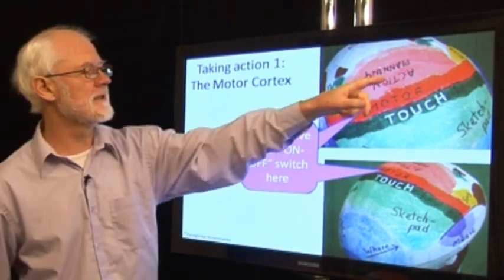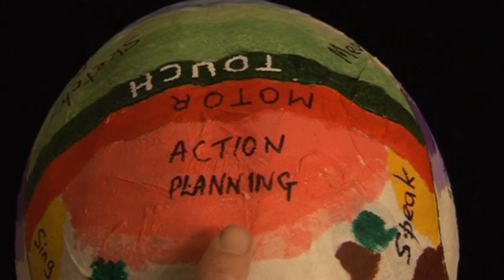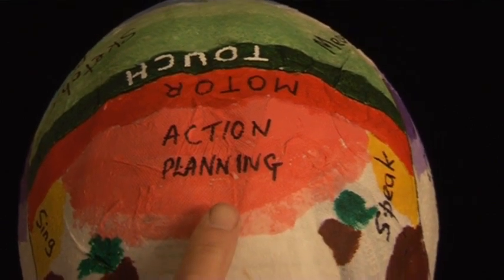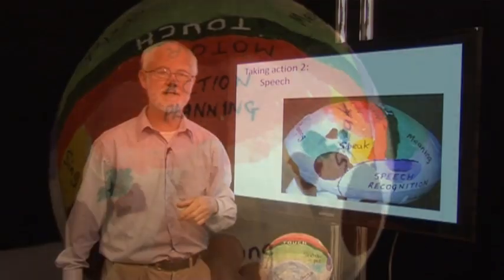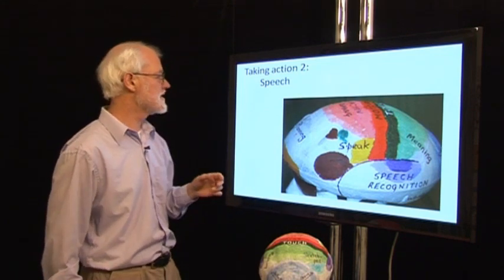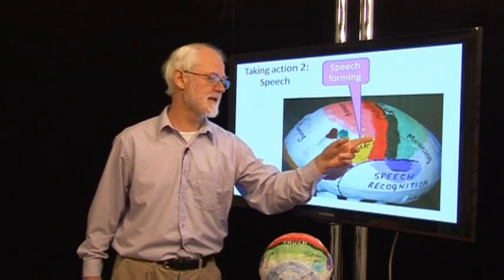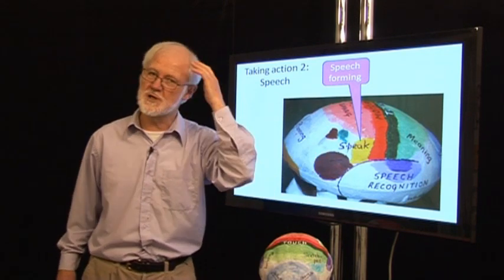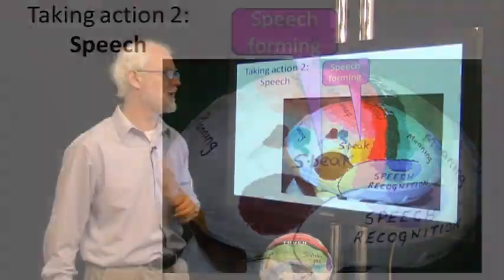And this is all done in the area in front of it which we call the action planning area. There is a second important kind of action which is speech, and this has a special area right next to the motor cortex, generally speaking on the left hand side.